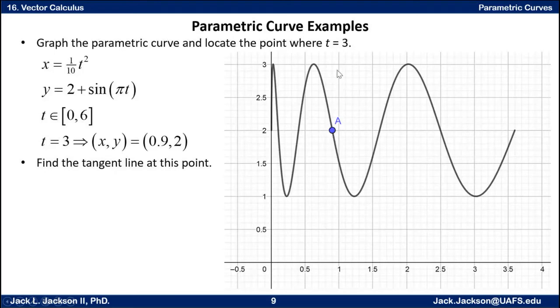I asked you to find specifically the point where T equals 3. You can see it located here at point A. We can find that by plugging in. 3 squared is 9 divided by 10 is 0.9, so X is 0.9. From the looks of it, Y should be 2. Let's verify that. 3 times π, sine of that is 0 plus 2 is 2. So yes, the X is 0.9, the Y is 2 when T equals 3.